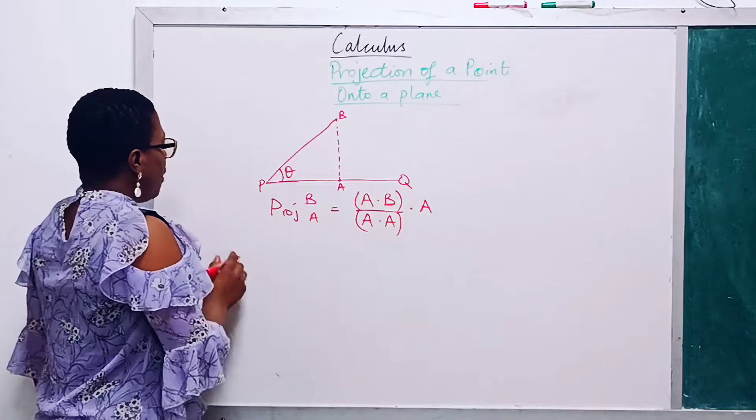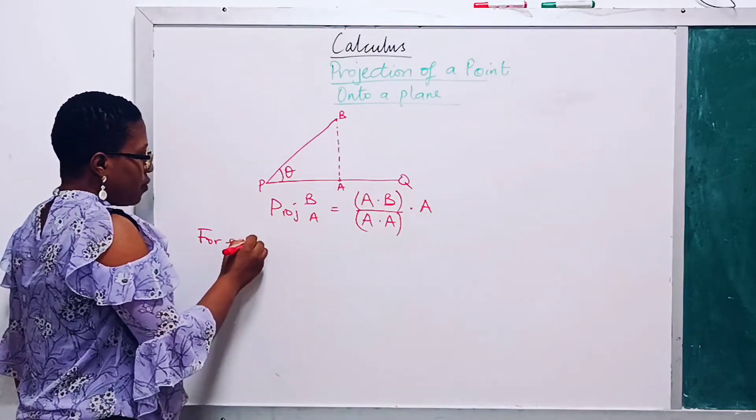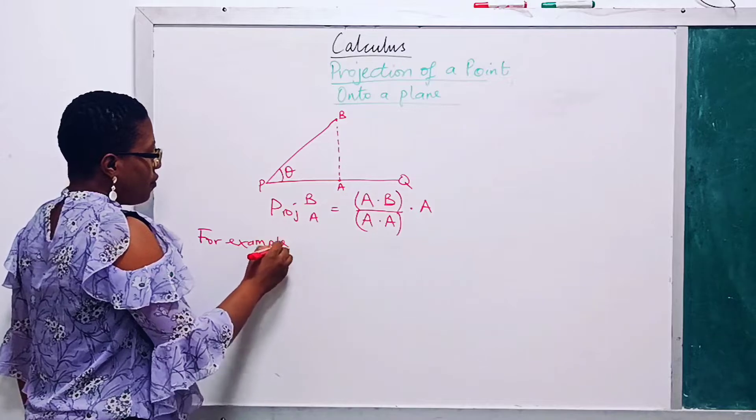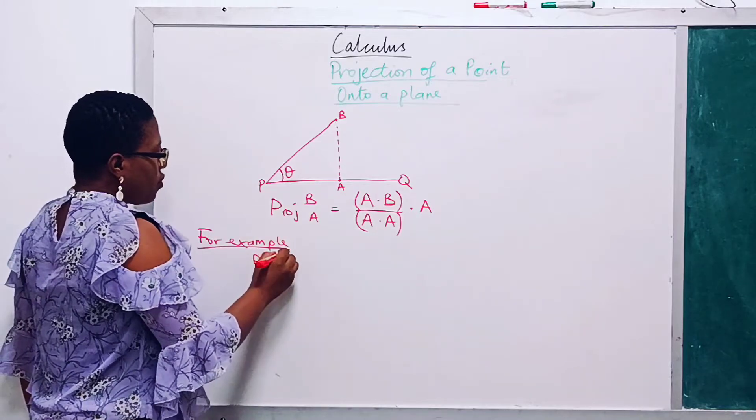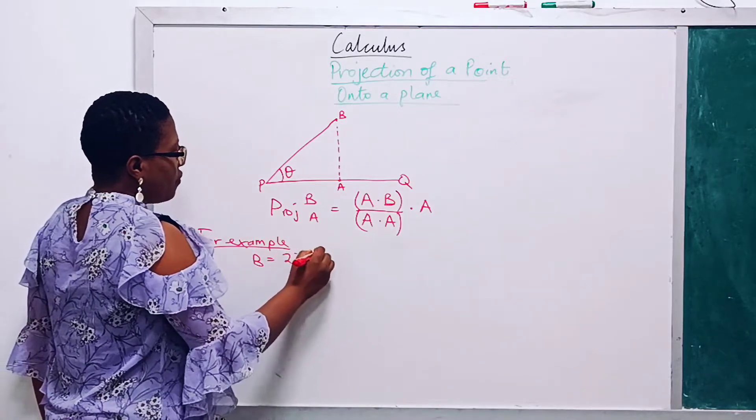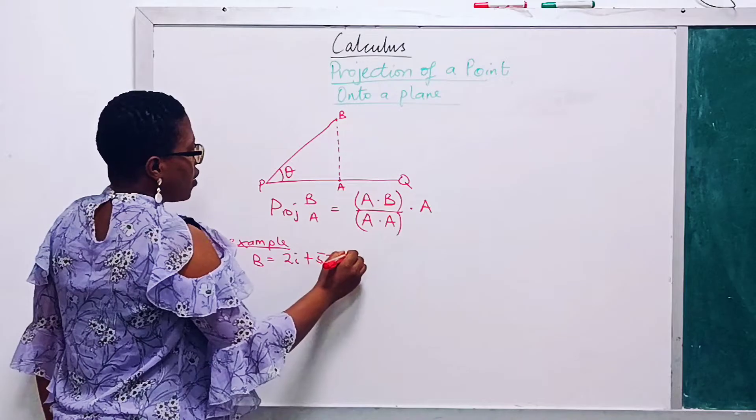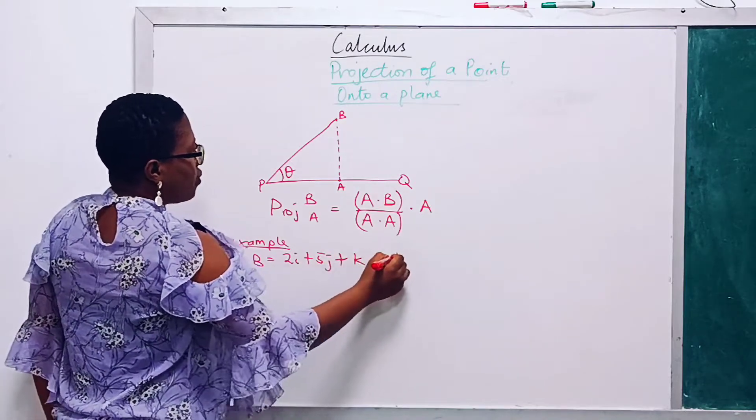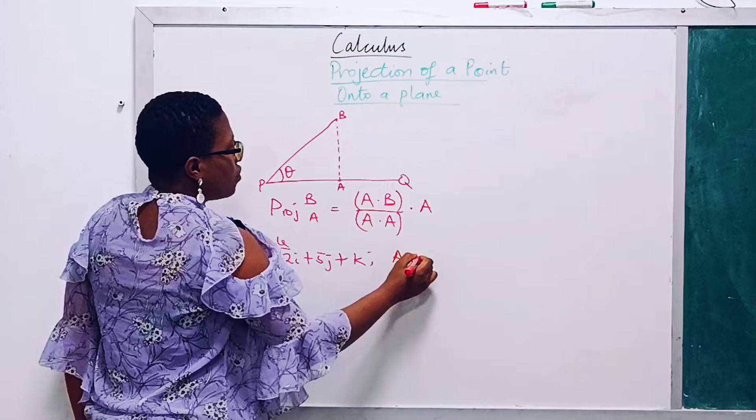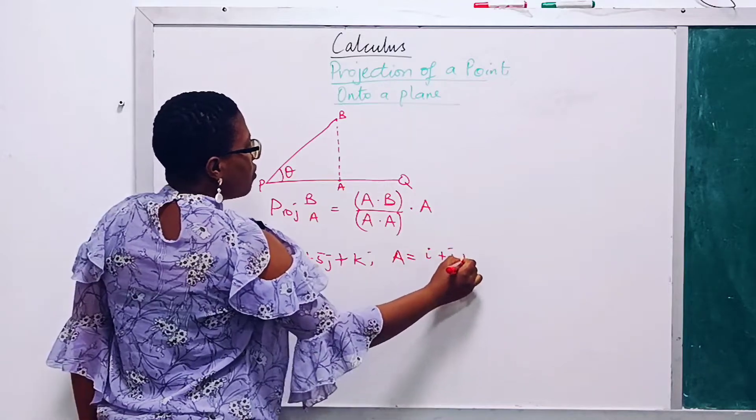For example, if we have D to be equal to 2I plus 5G plus K, and A to be equal to I plus J plus K.